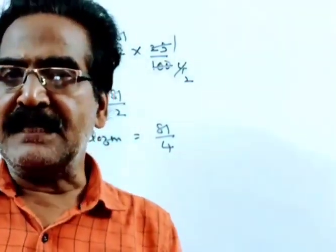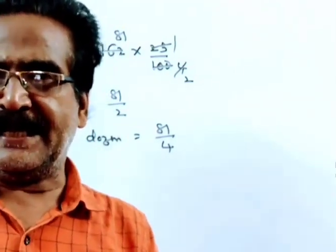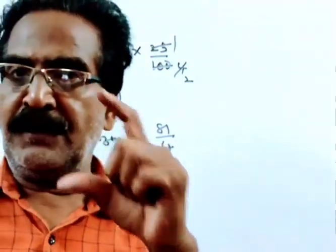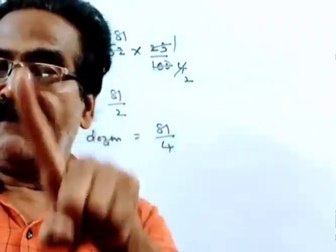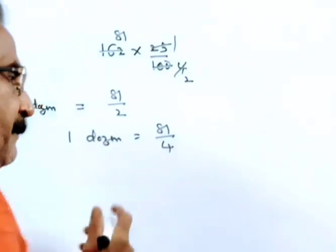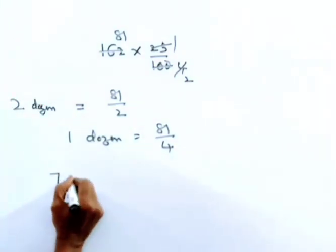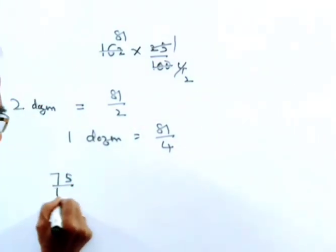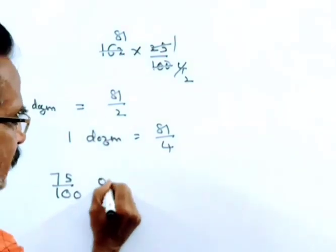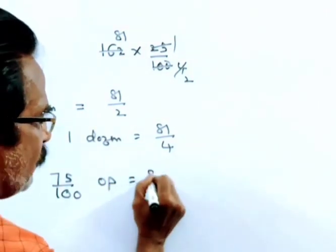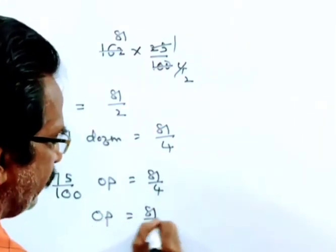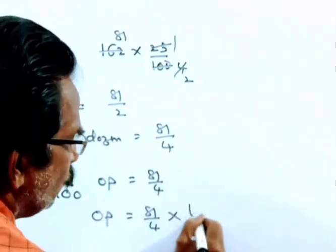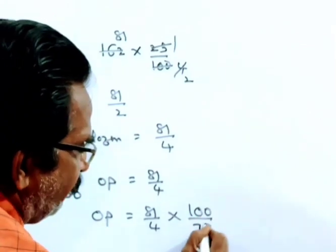Friends, we want the original price of dozen X. Here the fall is 25%. That means, this 81 by 4 is 75% of the original price. 75% of the original price is equal to 81 by 4.